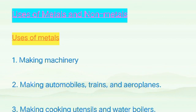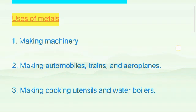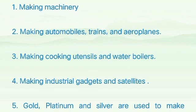Metals are used for making machinery, and also metals are used for making automobiles, trains and aeroplanes. Metals are used for making cooking utensils and water boilers. As we learned, metals are good conductors of heat.